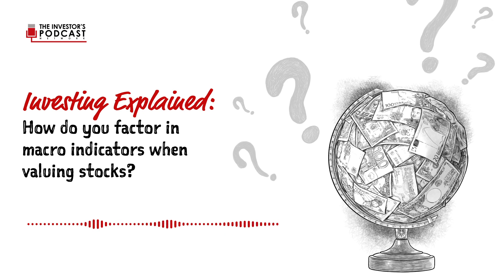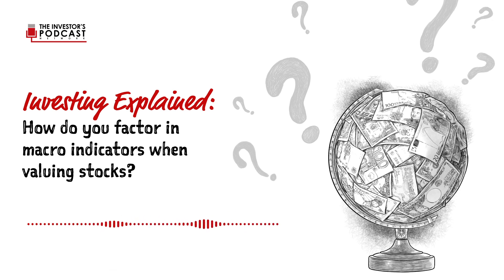But to answer your question, how do I include macro in my investment thesis? I would say that I always look at the main economic cycle. Unless you have a counter-cyclical company, say a company that specializes in bankruptcy, you will see a decline on your bottom line when the economy is in a recession, and a boost whenever you anticipate an upswing. We have a lot of good economic indicators to make predictions, but it's a lot harder than it sounds, which is also why I don't attribute too much to the macro factors.